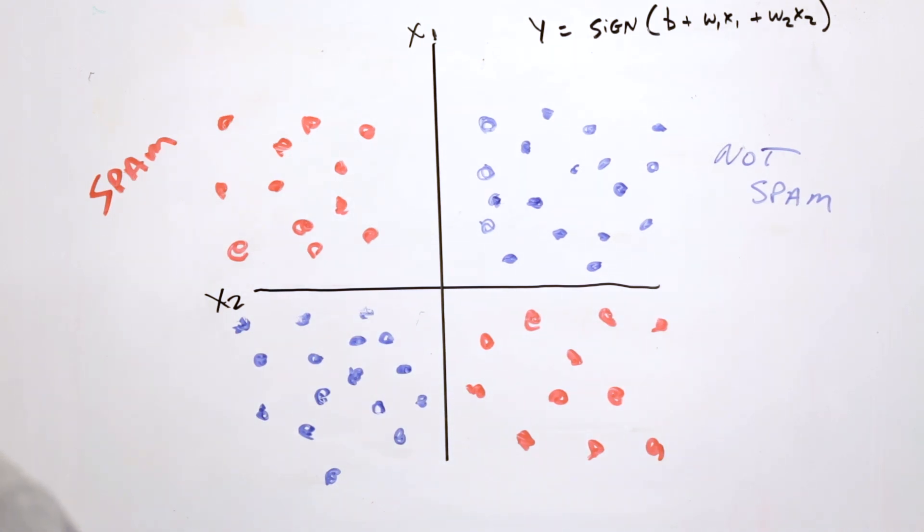In this world, there's really no way for us to fit a simple linear model that's going to get anything more than about 50% accuracy. What can we do?